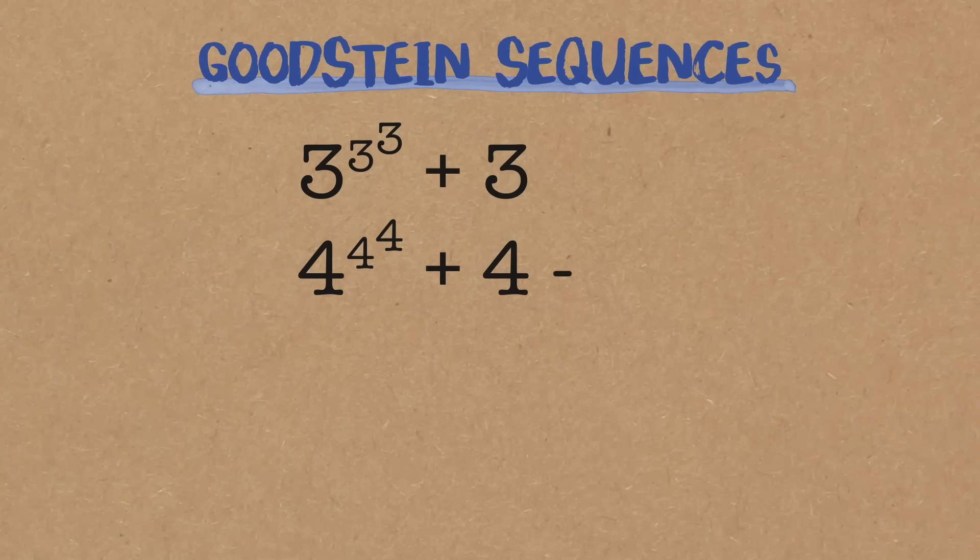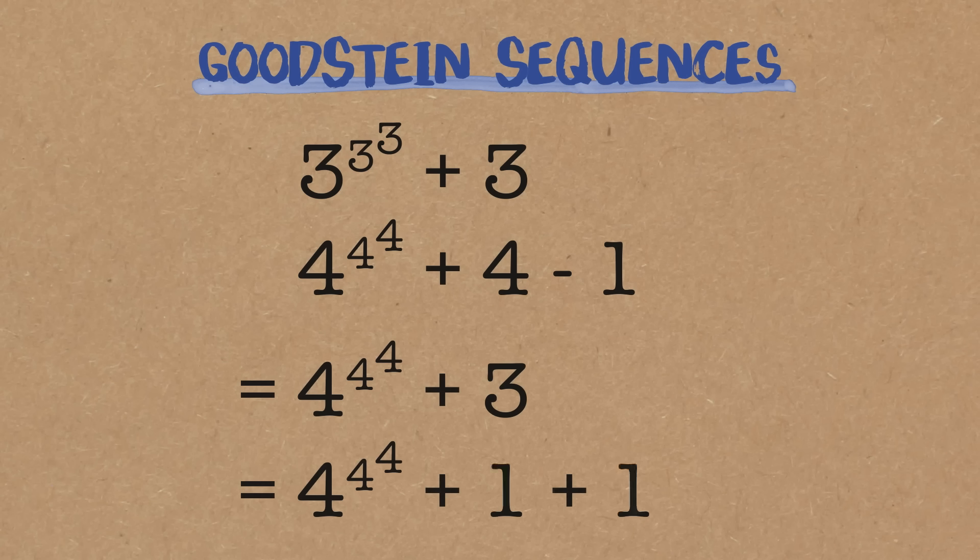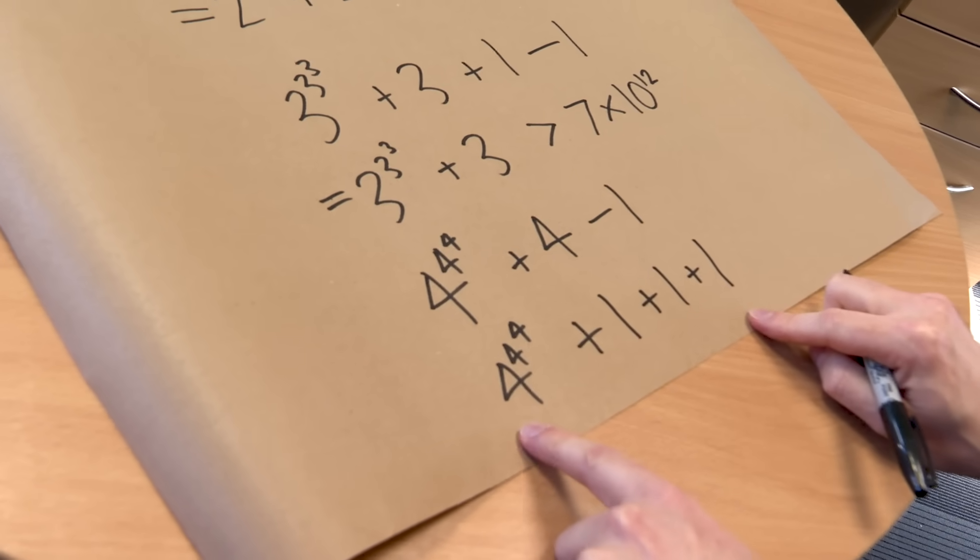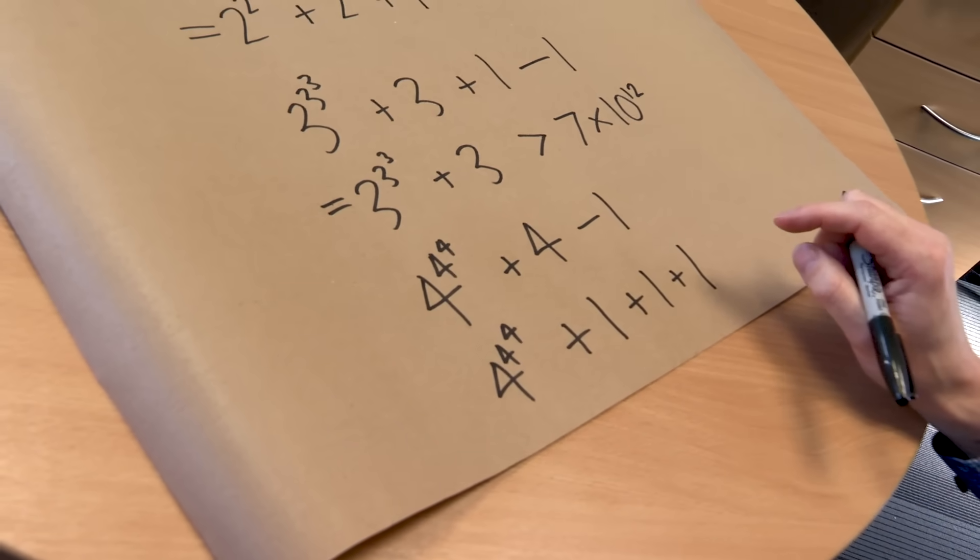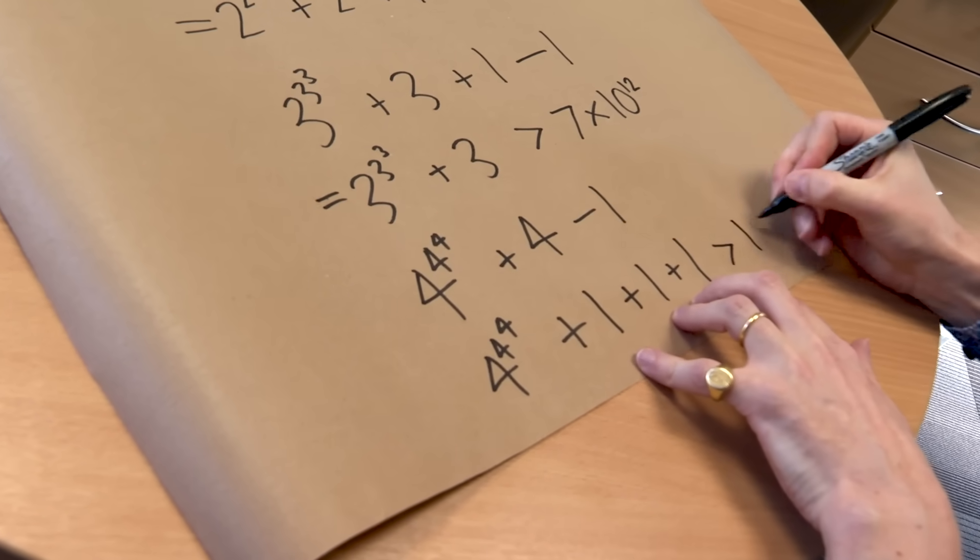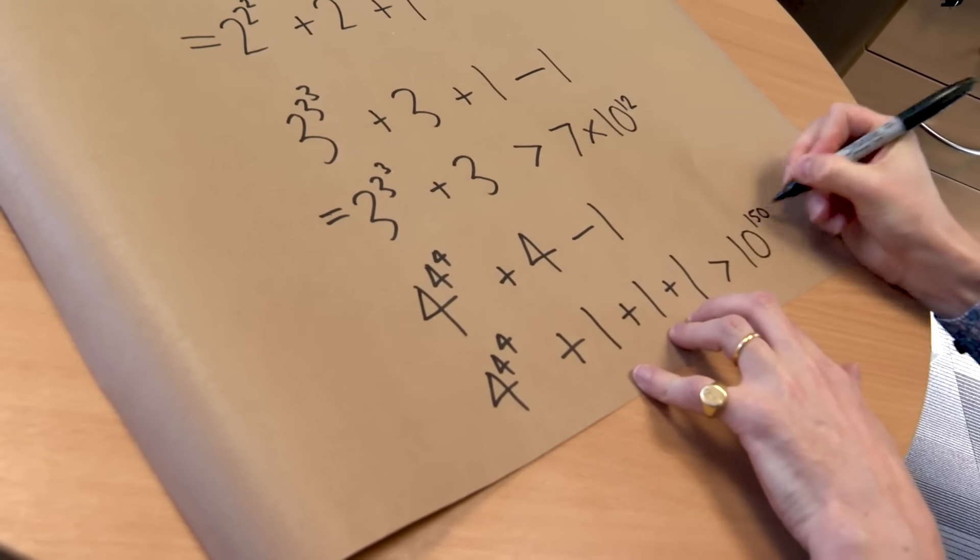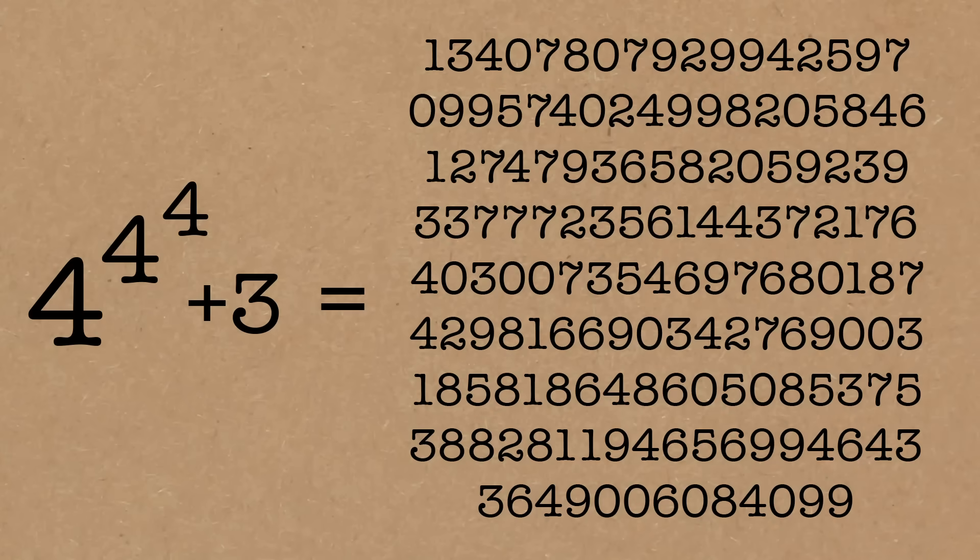We're only getting started. Let's do another step. Same thing again, replace all the 3s with 4s, and then subtract 1. So 4 to the 4 to the 4 plus 4, and then subtract 1. So we've got to recompute this now. So this 4 to the 4 to the 4, so this is now going to be plus 3, of course. I only want to see 4s and 1s, so I'm going to rewrite the 3 as 1 plus 1 plus 1. So we've got it in the right form. How big is this number? This is bigger than 10 to the power of 150. So that's a 1 with 150 zeros after it. Just for context, people generally take the number of atoms in the observable universe to be around 10 to the 80. So this is a pretty big number.